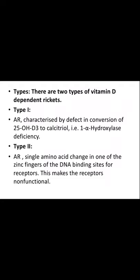There are two types of vitamin D dependent rickets. Type 1 is due to 1-alpha-hydroxylase deficiency, causing a defect in the conversion of 25-hydroxycholecalciferol to 1,25-dihydroxycholecalciferol. In type 2, there is a single amino acid change in one of the zinc fingers of the DNA binding sites for receptors, making the receptors non-functional so active vitamin D cannot work.